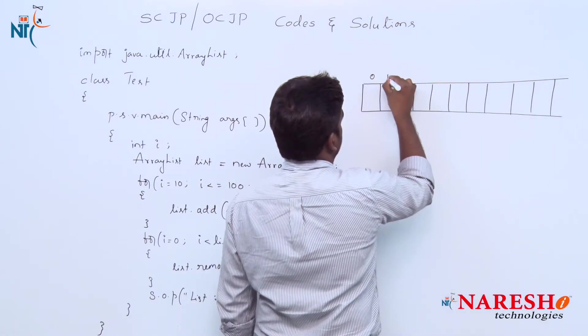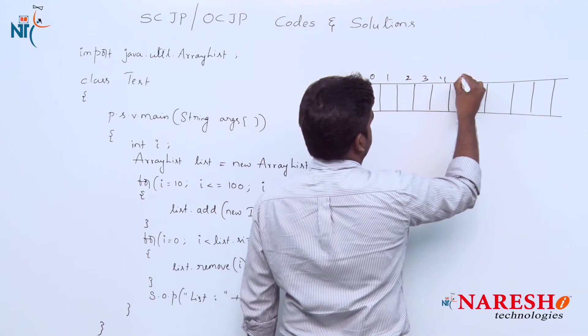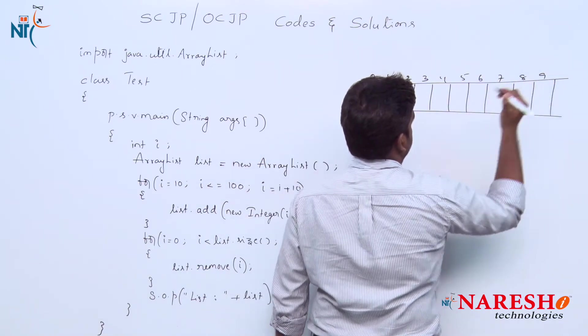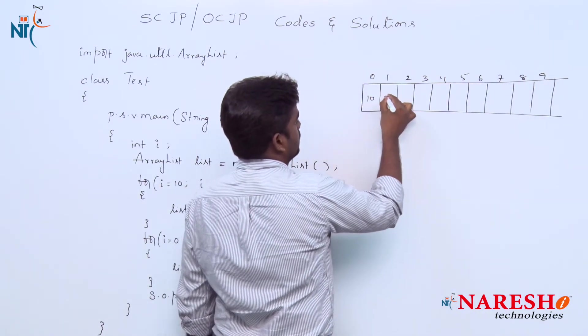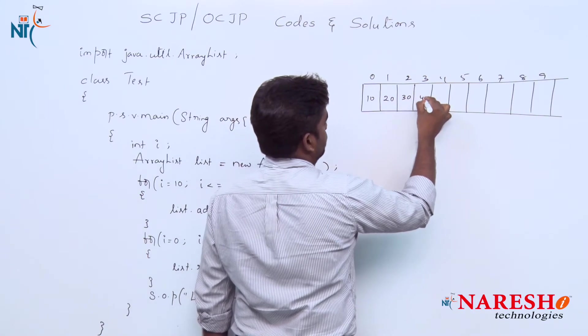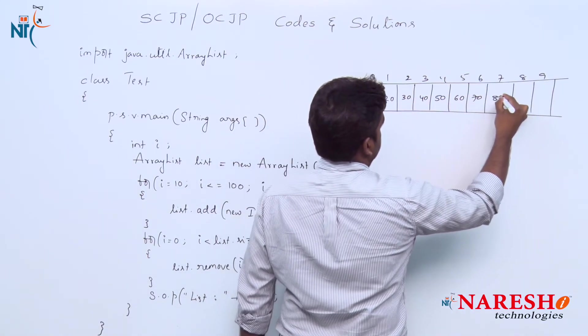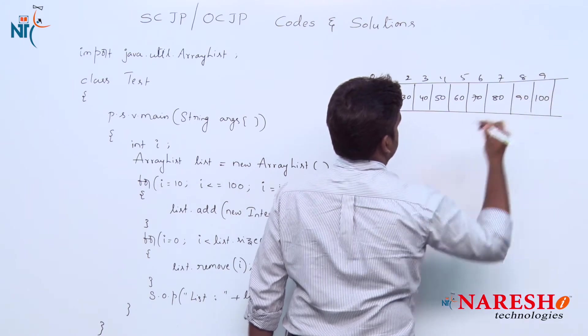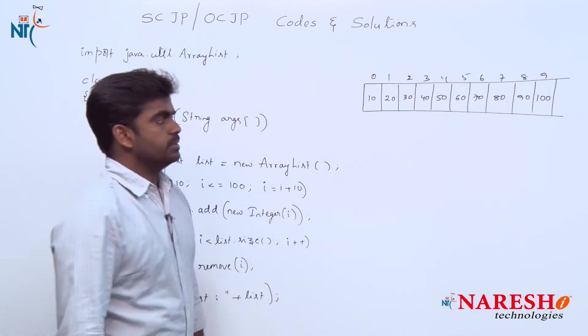The indices are 0, 1, 2, 3, 4, 5, 6, 7, 8, 9. The elements are 10, 20, 30, 40, 50, 60, 70, 80, 90, 100. All the elements will be stored.